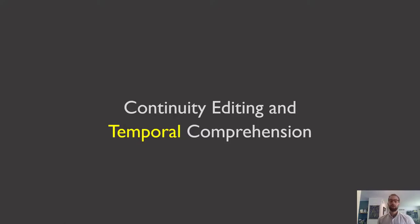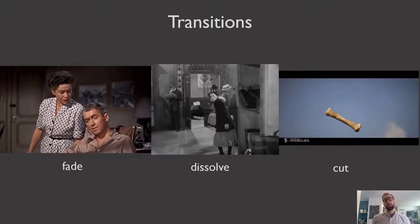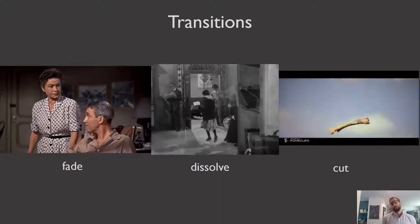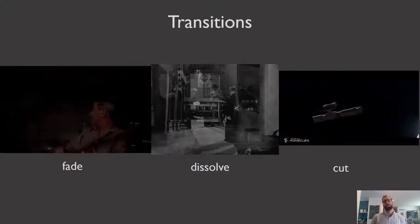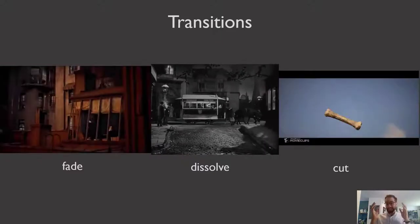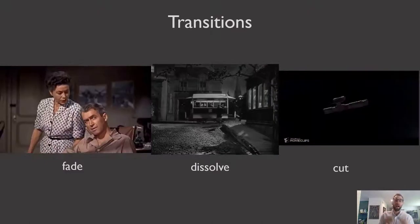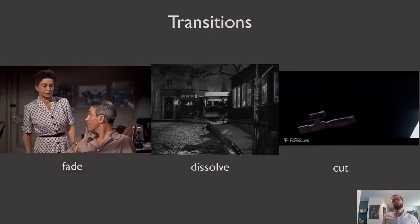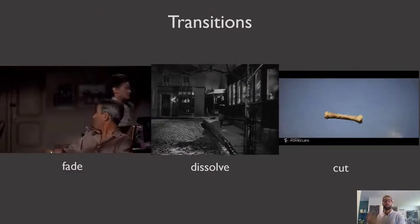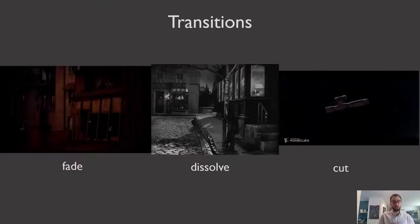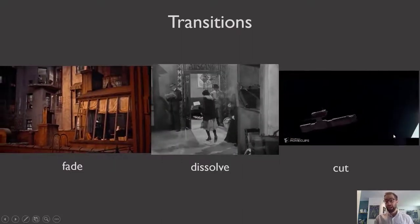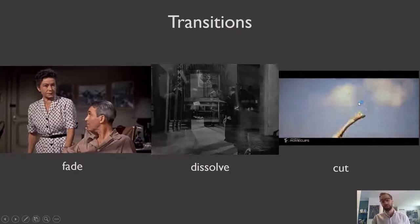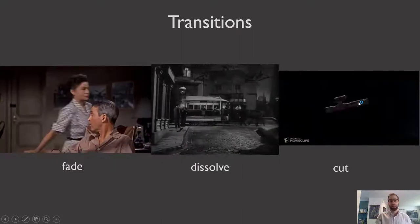Today we're going to continue our lesson on continuity editing with a shift from space to time. This is continuity editing and temporal comprehension. The first thing we're going to look at is transitions — how do you get from one shot to the next? Most conventionally, you get from one shot to the next with a cut.